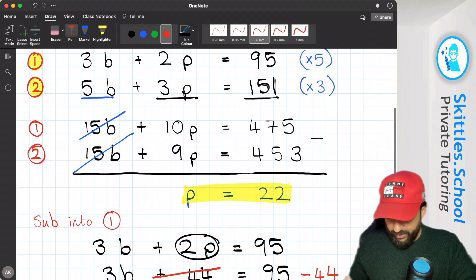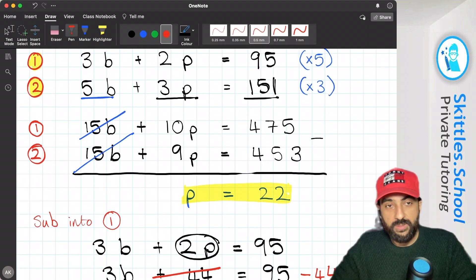Check in equation 2. Equation 2 said 5 bananas plus 3 pears equals 151.